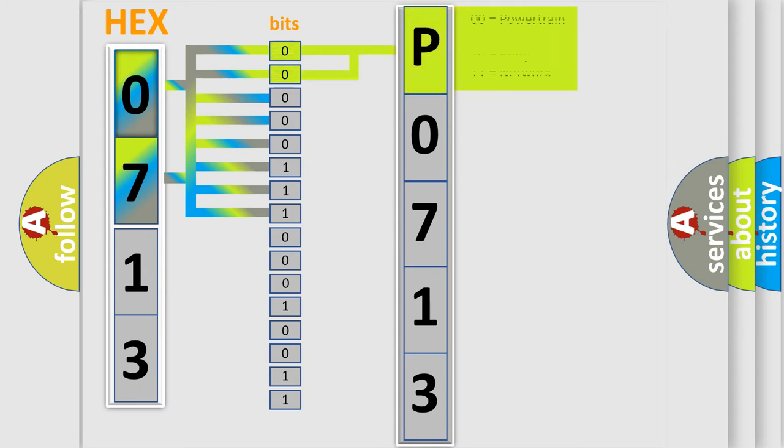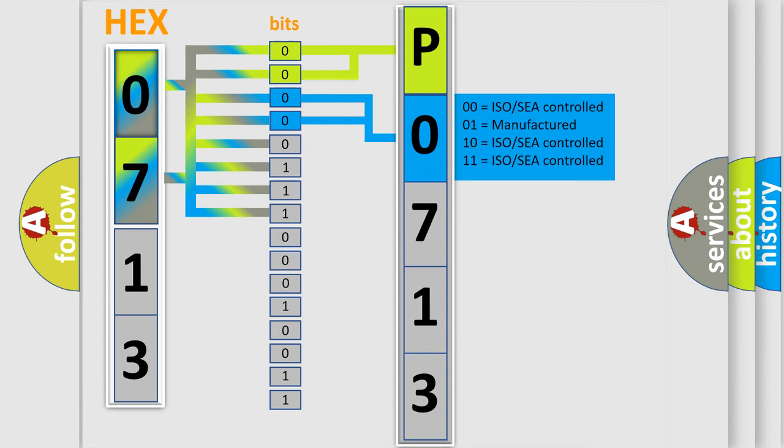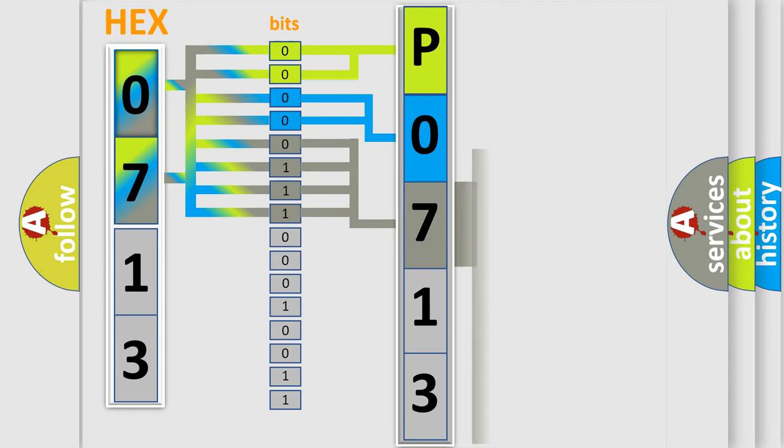By combining the first two bits, the basic character of the error code is expressed. The next two bits again determine the second character. The last bit styles of the first byte define the third character of the code.